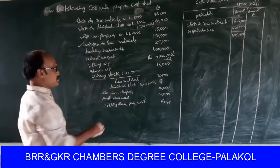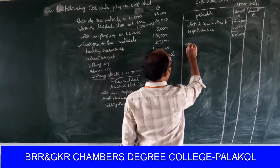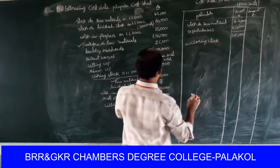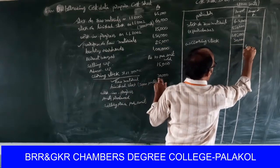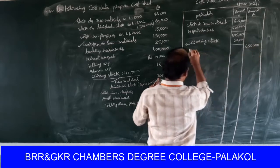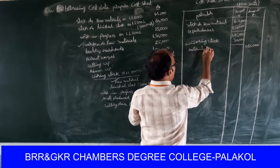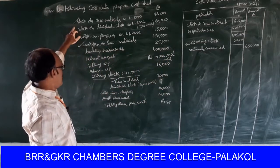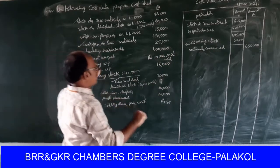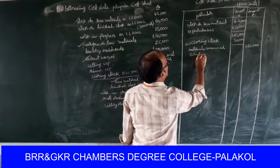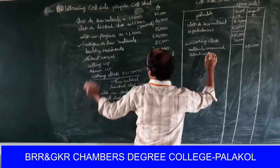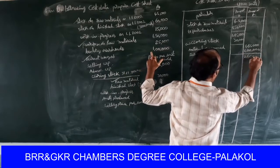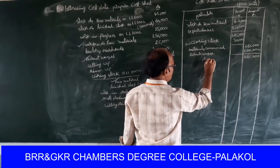Less closing value of raw material: thirty thousand. So one lakh ninety-five thousand minus thirty thousand equals one lakh sixty-five thousand, treated as materials consumed. Next, direct wages: one lakh rupees. One lakh sixty-five thousand plus one lakh equals two lakh sixty-five thousand, treated as prime cost.